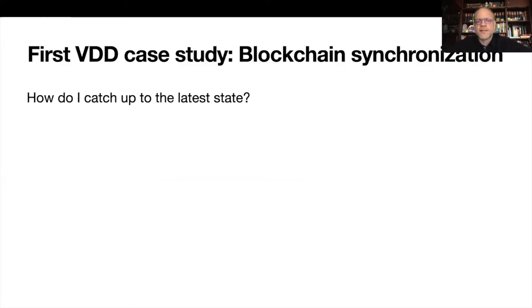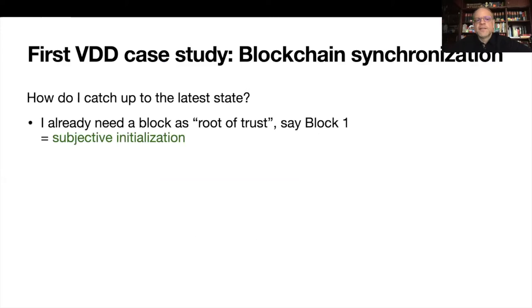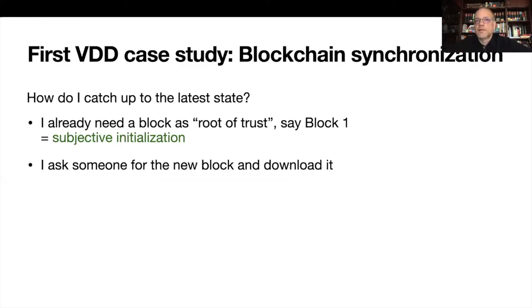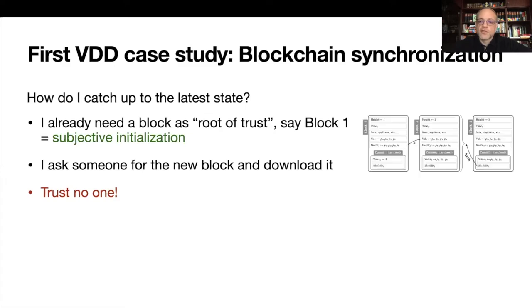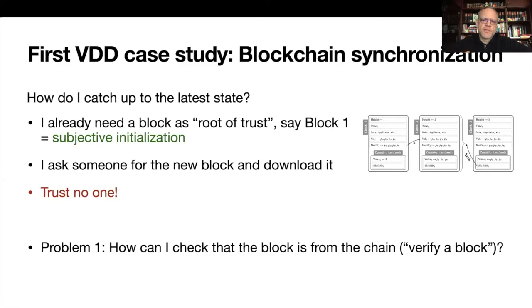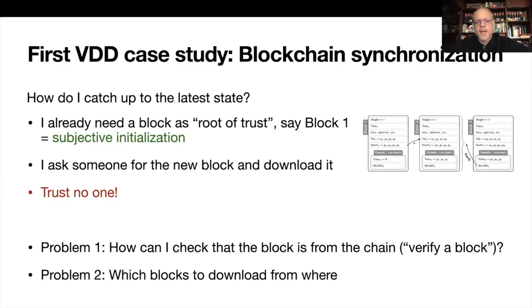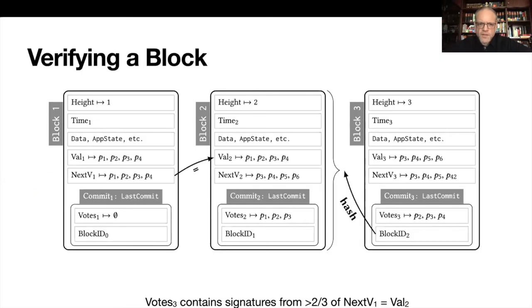FastSync is a solution to the blockchain synchronization problem: how do I catch up to the latest state if I was disconnected for some time? In Tendermint, you need a root of trust — typically the initial block — and then you ask peers for new blocks to download. But you cannot trust any information in a fault-prone environment, so you must check the blocks you receive. Blockchain synchronization protocols address two problems: first, how can I verify a block is from the chain (block verification); and second, which blocks do I download from where, involving load balancing and identifying faulty nodes. Due to limited time, this talk focuses on block verification.